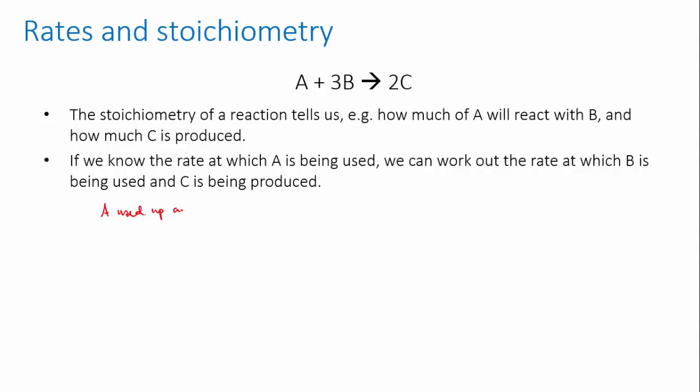Say A is being used up at 0.01 moles per liter per second. You can see from the stoichiometry that three Bs are used for every one A. That means B must be used up three times as fast as A. So the rate at which B is consumed is 3 times 0.01 equals 0.03 moles per liter per second.